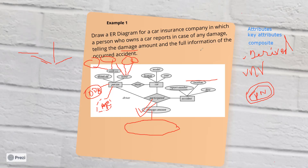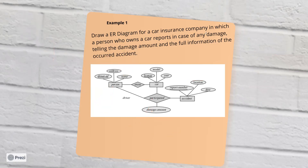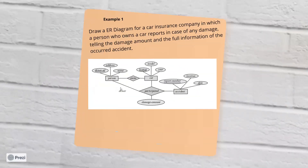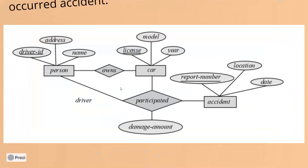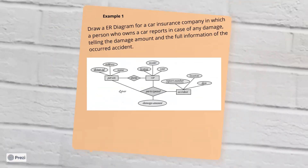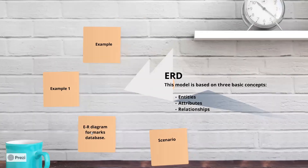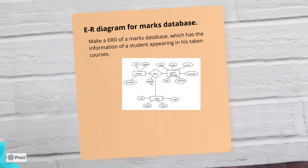So these are the things you need to know when working on ERDs. This was example one, which we have deeply discussed. Now we have another example: the Mark Distribution System. In this system, a student is appearing for a particular course.